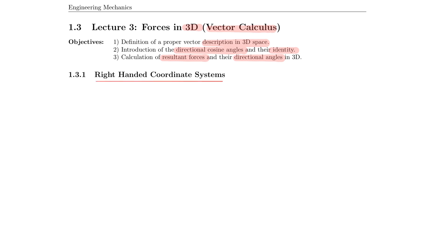I believe that we all learned one method or another before in high school to identify right-handed coordinate systems. Some of them I find more complicated than others, and some are actually very difficult to follow if it comes to more complicated or strangely arranged coordinate systems. Let me talk about one of those methods as a placeholder before I introduce the right-handed system that I like to use when I solve these problems.